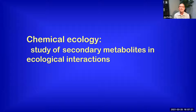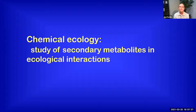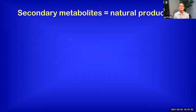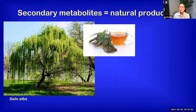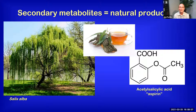Today we're going to talk about chemical ecology, which is the study of secondary metabolites and ecological interactions. Secondary metabolites are compounds that are not involved in primary metabolism — another term for them is natural products. Human beings have been interested in secondary metabolites since ancient times, when people discovered that taking bark from a white willow and making an extract of it would relieve headaches and pains. It wasn't until the 19th century that the responsible secondary metabolite was identified — the basis for aspirin and the Bayer aspirin company.